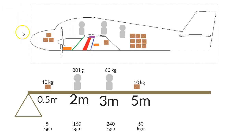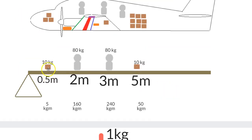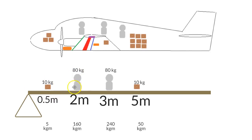In video one of this series, we spoke about how the echo loading system is based on moments, and moments are based on forces around a rotational point. Just like if you use a longer spinner and apply a one kilo force, as you double the length, the force goes up. So with loading the aircraft, the further you load items from the point that we're measuring, the more effect they have.